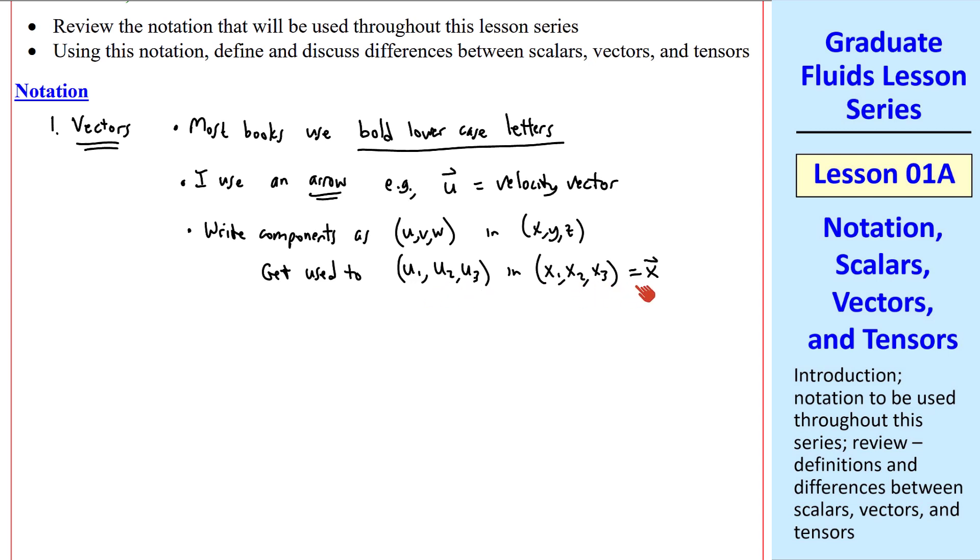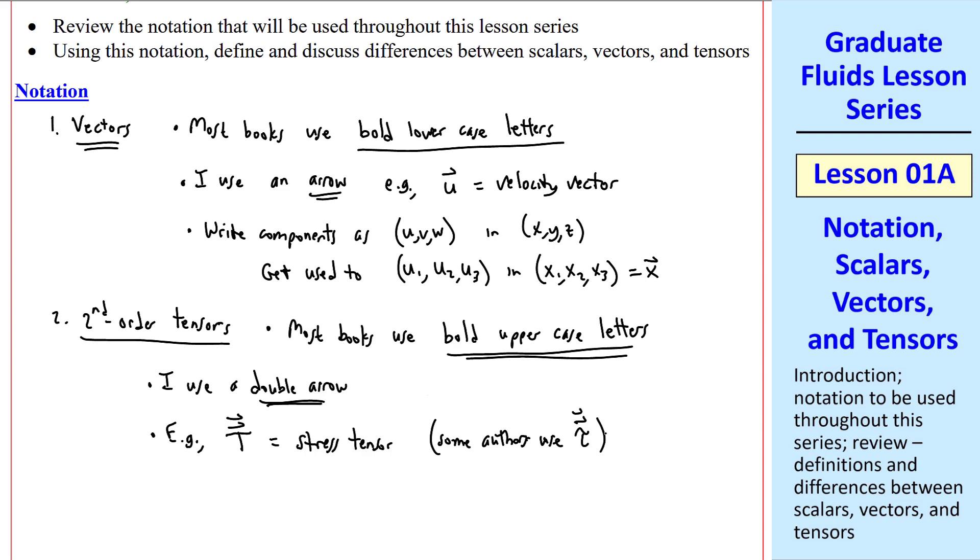The position vector can be called x with an arrow on top. What about second-order tensors? Most books use bold uppercase letters. I use a double arrow. For example, capital T with two arrows is the stress tensor. Some authors use tau instead of t for the stress tensor. We'll talk more about second-order tensors in the next lesson.